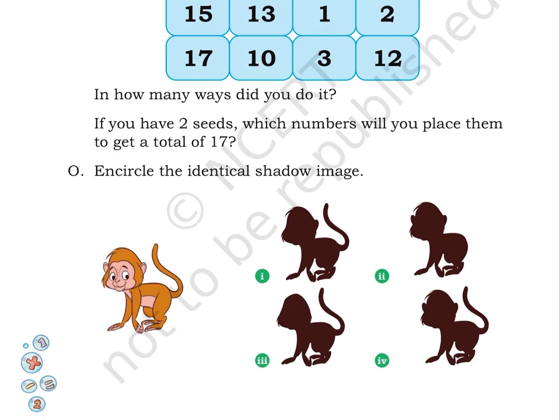Puzzle O: Encircle the identical shadow image. Here on page number 126, on the left hand side, a picture of a baby monkey is given. On the right hand side, there are 4 different shadow images given. You have to identify the appropriate shadow image and name it.